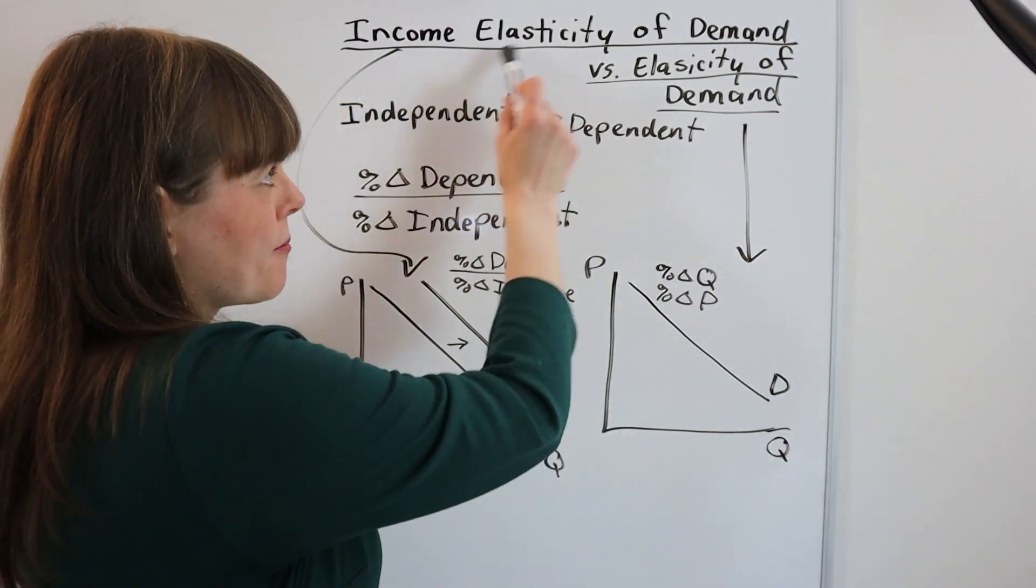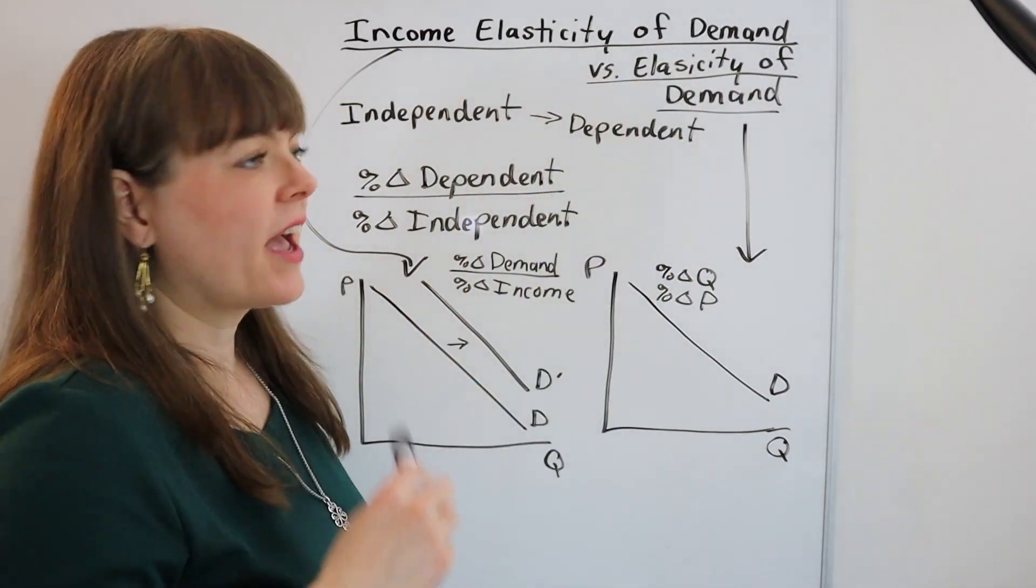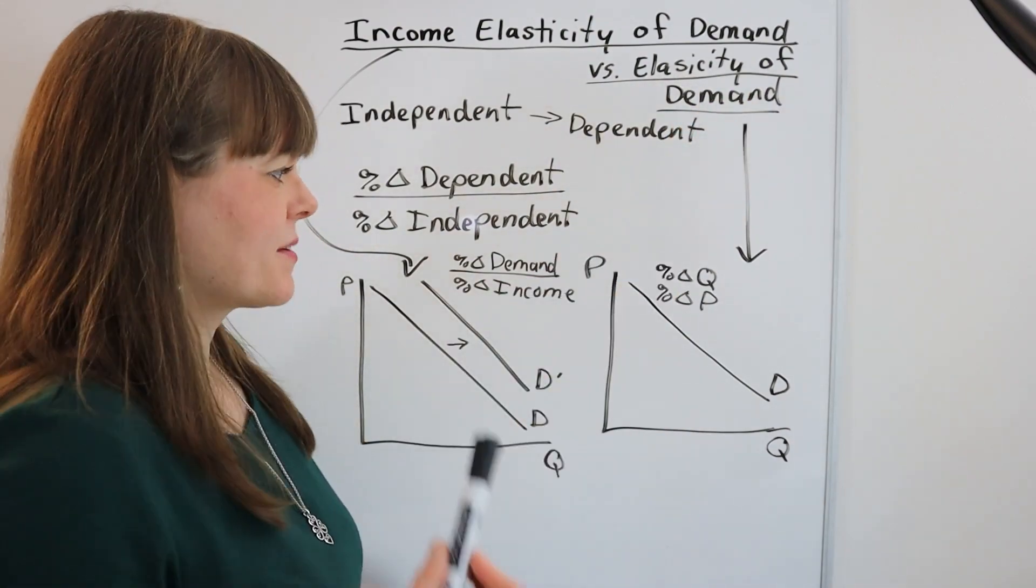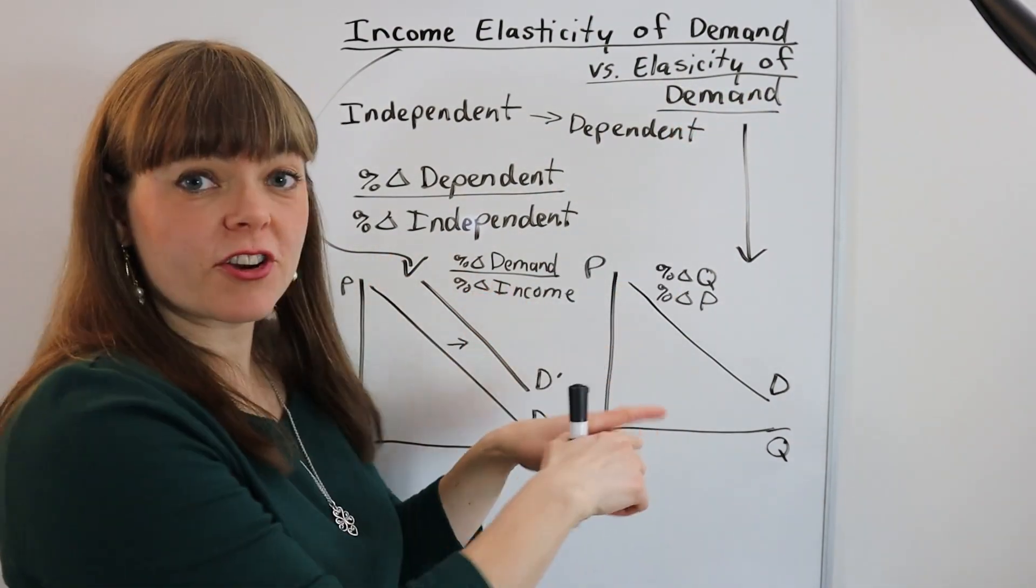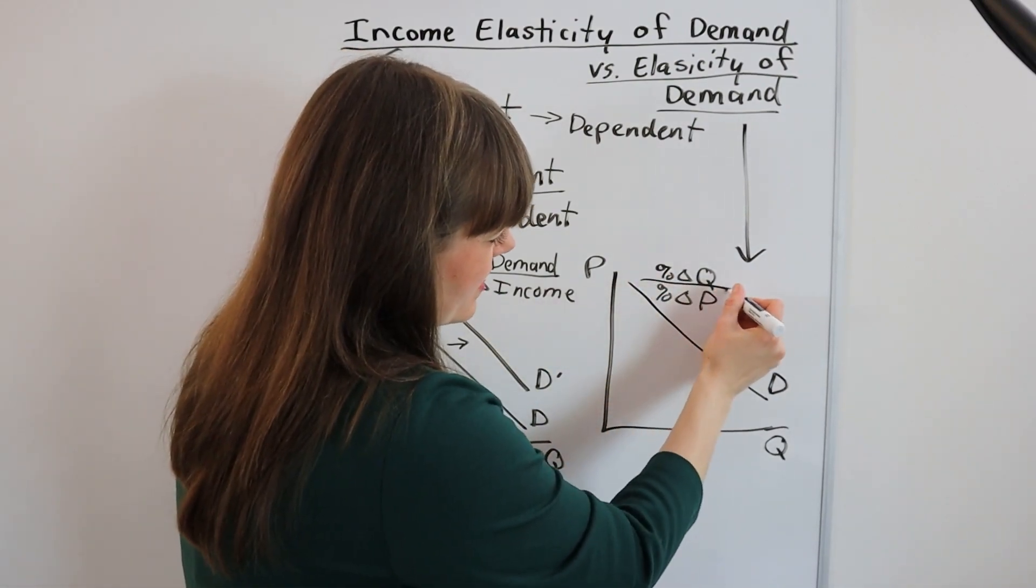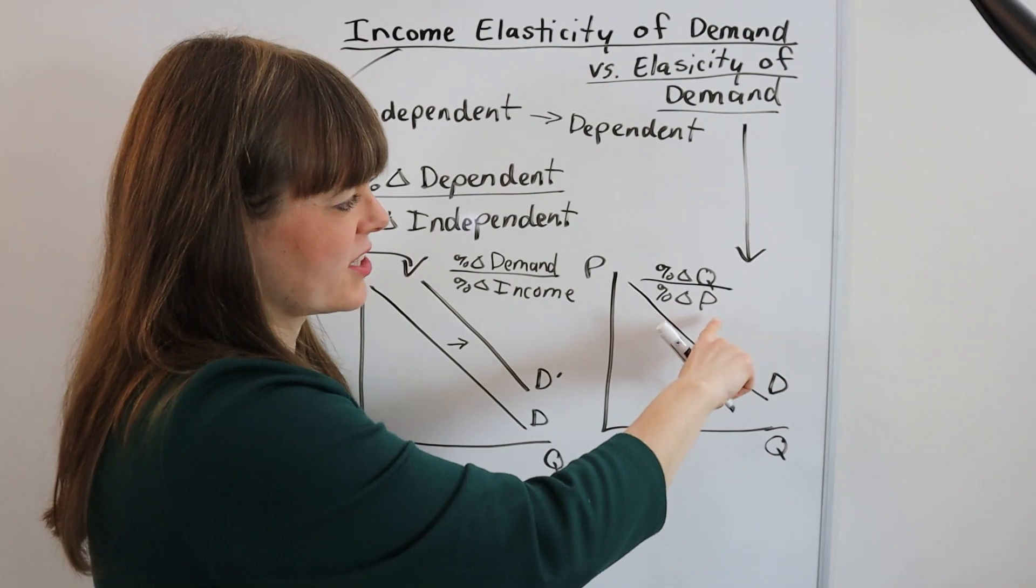What's the difference between income elasticity of demand and regular old elasticity of demand? Basically the difference is that regular elasticity of demand, which is percent change in quantity that people purchase over percent change in price,